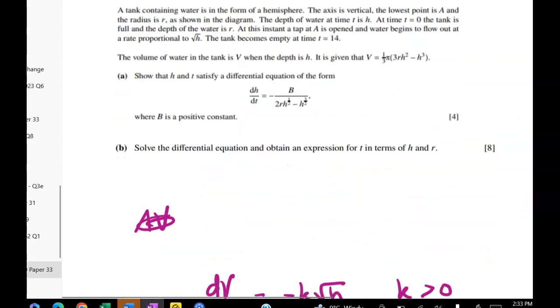So you can pause the video and have a go at that now. Now this gets a little bit messy. But the basic first step is of course to separate the variables. Because that's really all we know how to do. Then the next thing that we're going to use is that T equals 14 is when the volume is equal to zero.